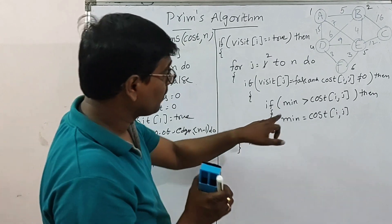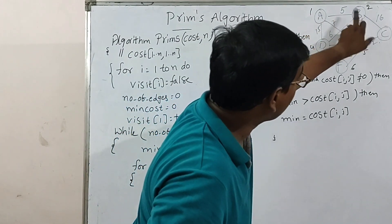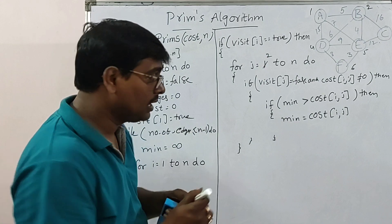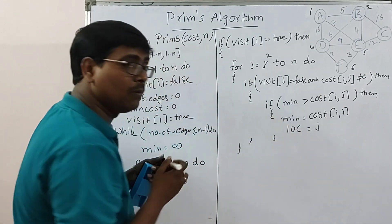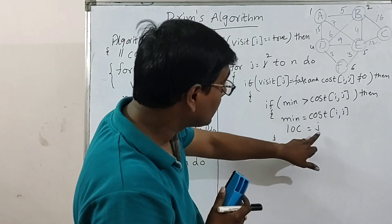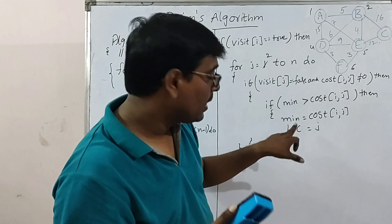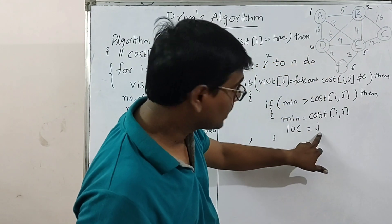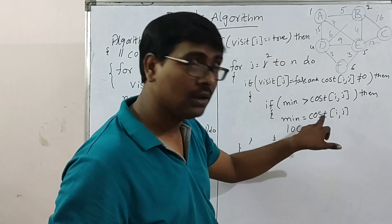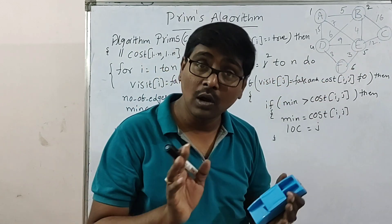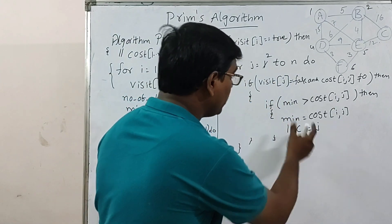One important point: whenever we enter the if condition, use a variable LOC = J, storing for which value of J we are getting the minimum value. According to our example, the first time LOC contains B. For D, we did not enter the if case, so LOC remains B. For E, LOC value is B. This is how identification of the adjacent vertex along with the minimum edge is stored.